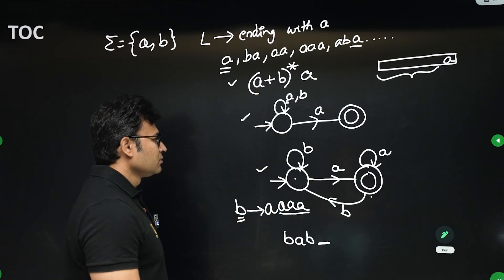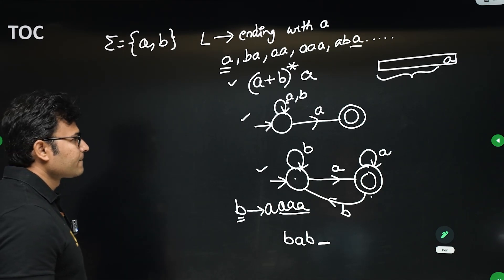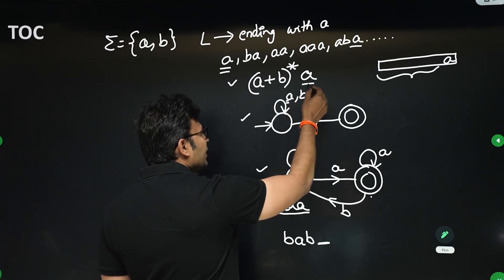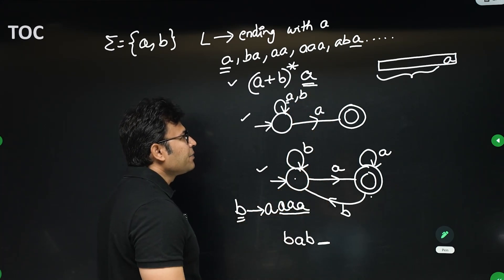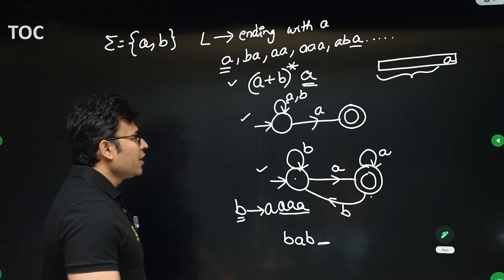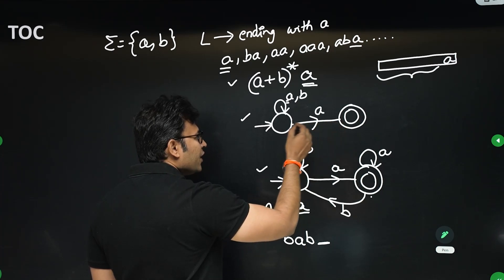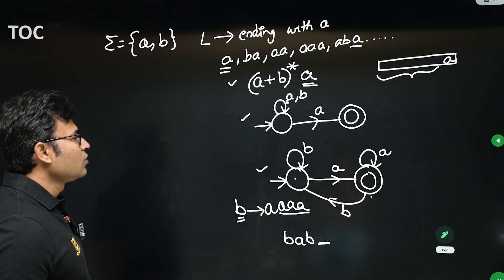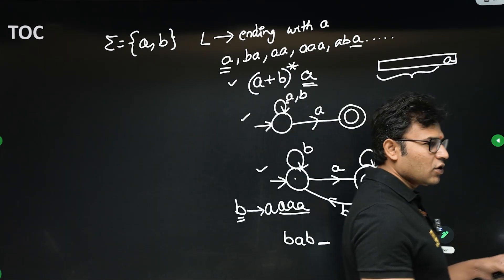Since the question is about ending with 'a', you get two states — that is n+1 states. You have to put that 'a' on an edge, so you get two states. I'll tell you how to answer this type of question without actually solving it in the exam.